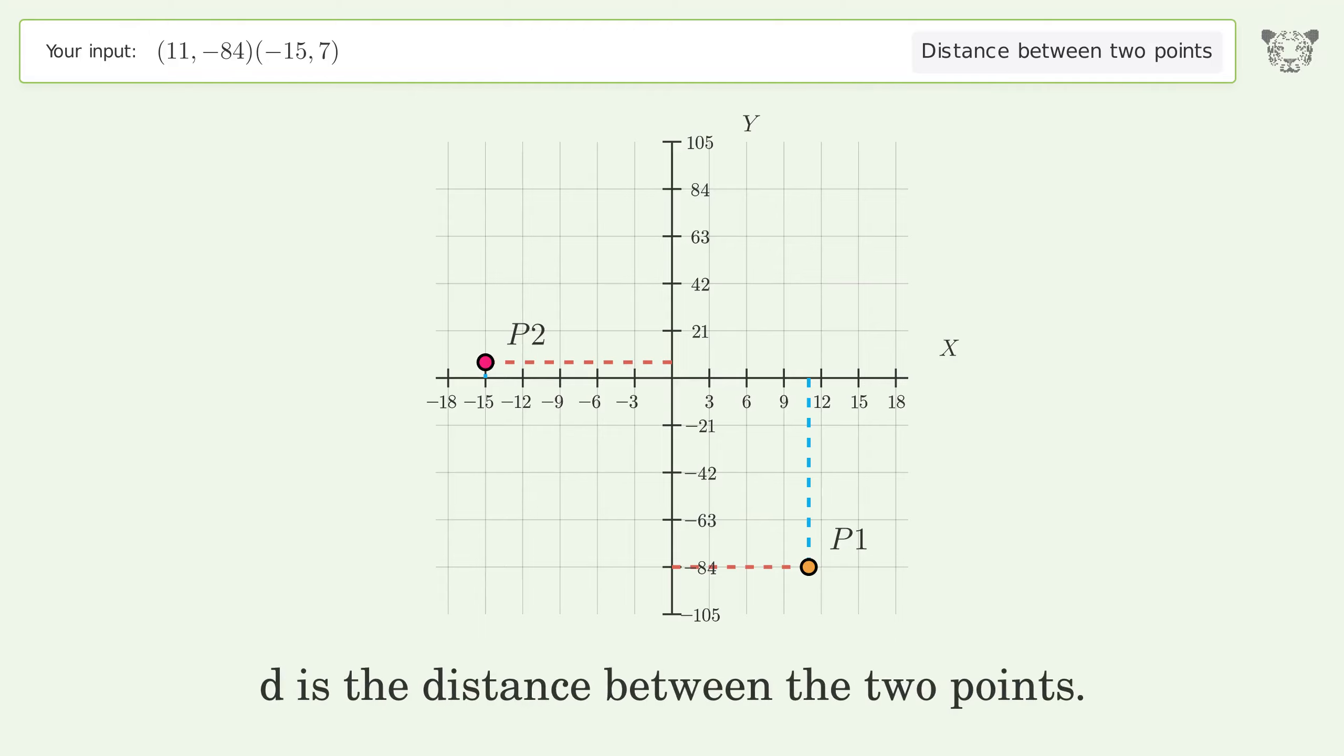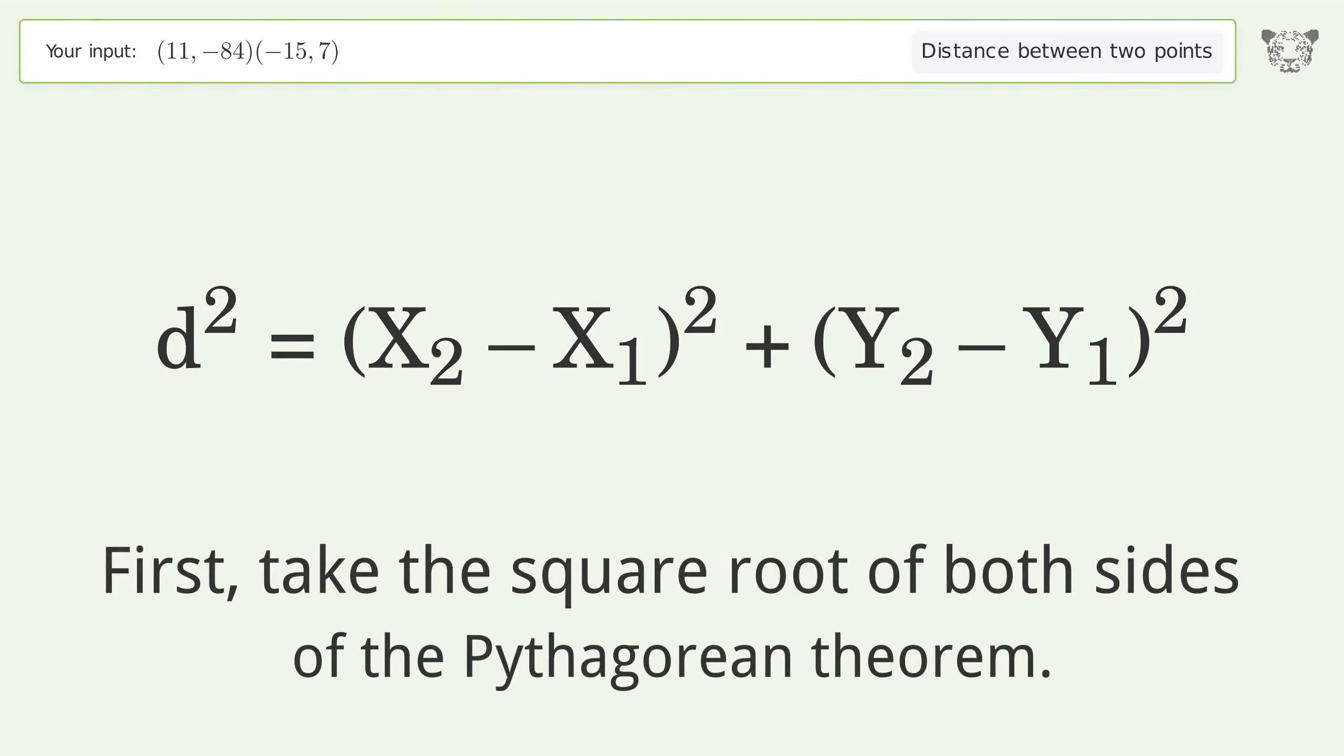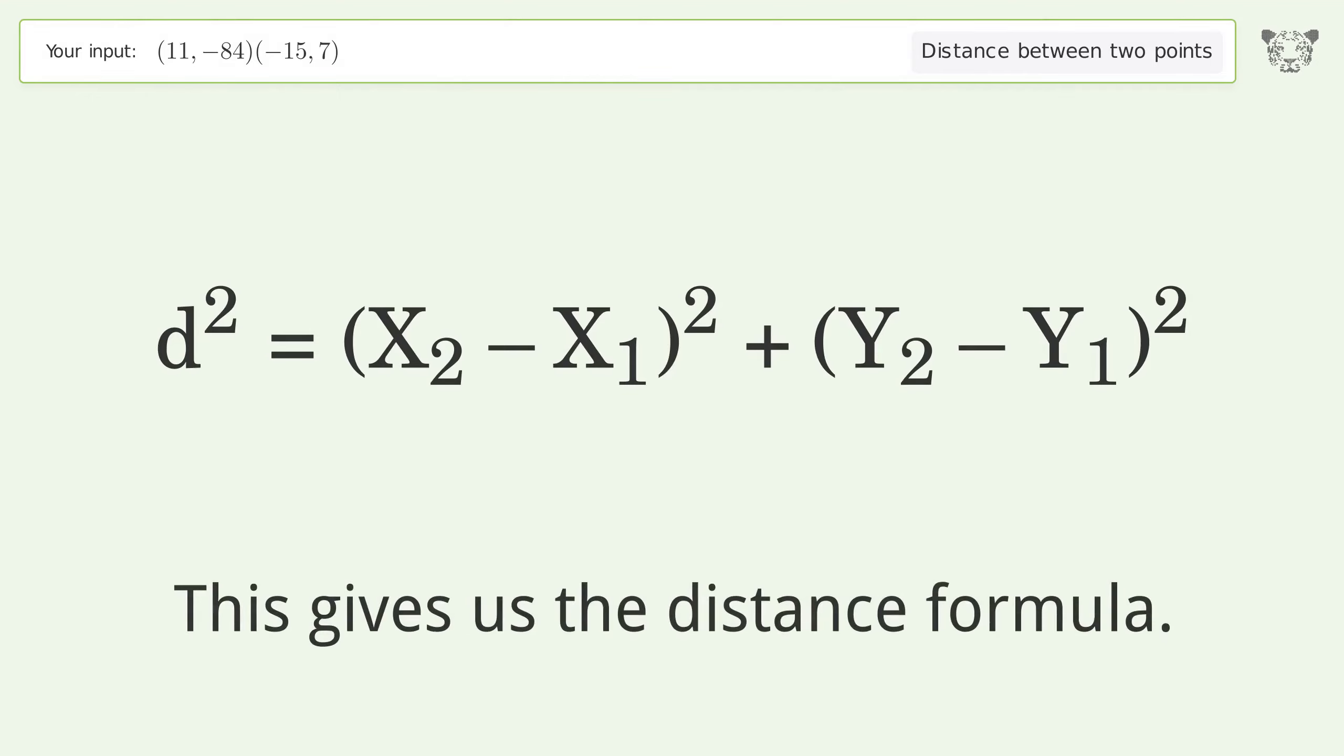d is the distance between the two points. First, take the square root of both sides of the Pythagorean theorem. This gives us the distance formula.